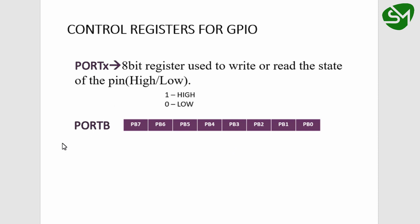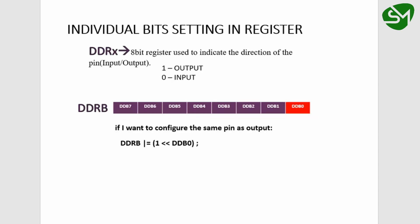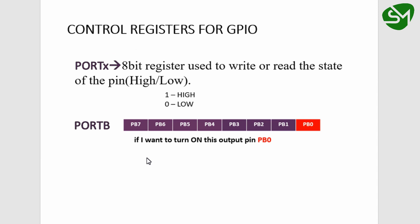Let's take an example. If I want to turn on output pin PB0, I can write 1 to it. That can be done using the individual bits method — I can write PORTB |= (1 << PB0). As we saw in the DDRX configuration part, we can also set this pin using this line.